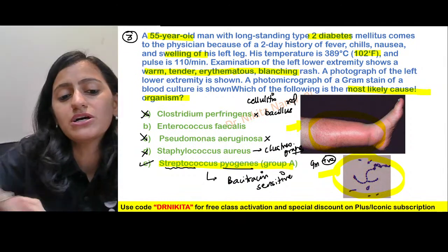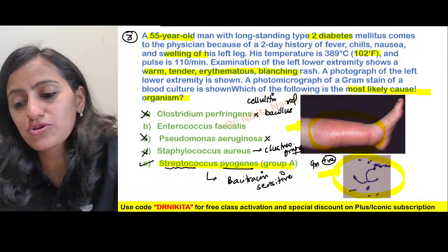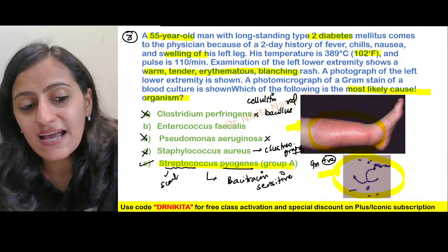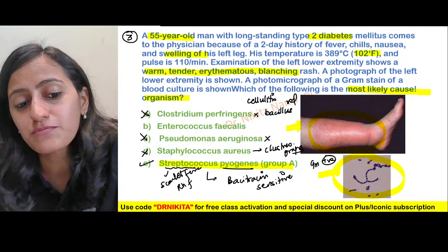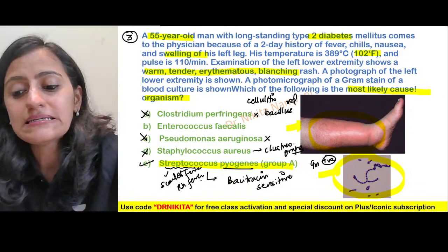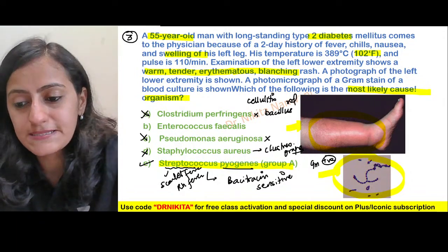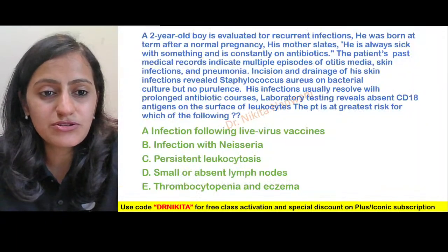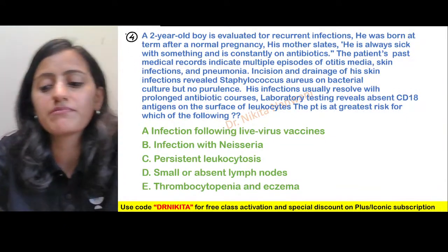Streptococcus pyogenes causes cellulitis. It can also cause scarlet fever and is associated with rheumatic fever. Those are the other important diseases associated with Streptococcus pyogenes. That completes question three — let's move to question four.